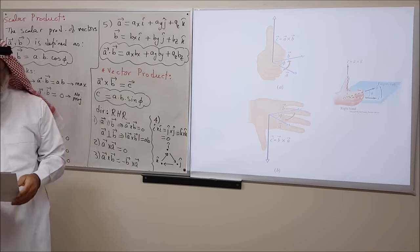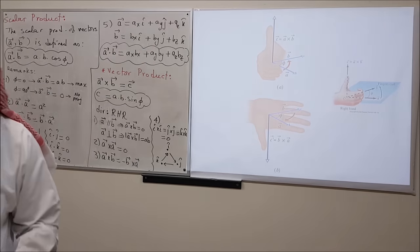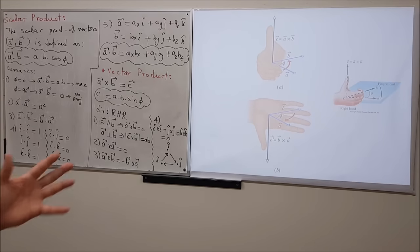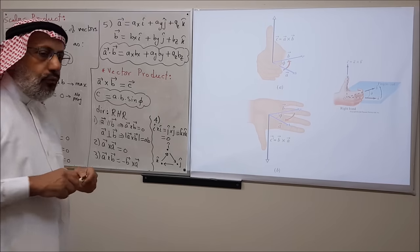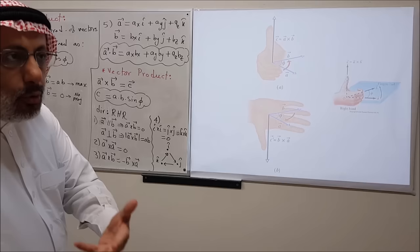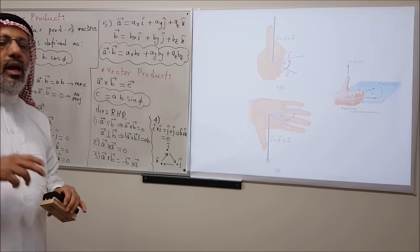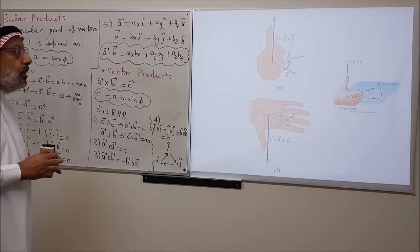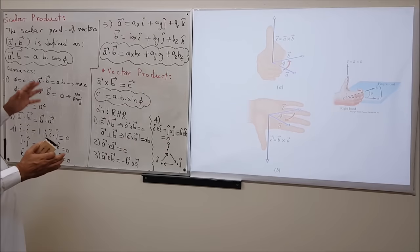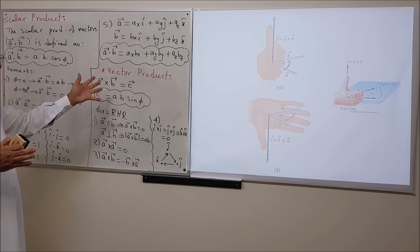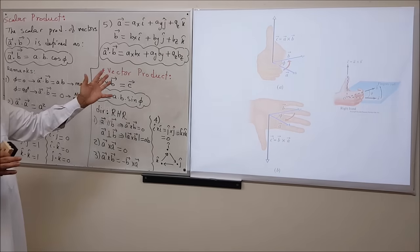That completes our discussion of Chapter 3. We have dealt with the addition and multiplication of vectors. In the remaining time we will look at examples from the textbook on the addition of vectors using the analytical method and on the multiplication of vectors.